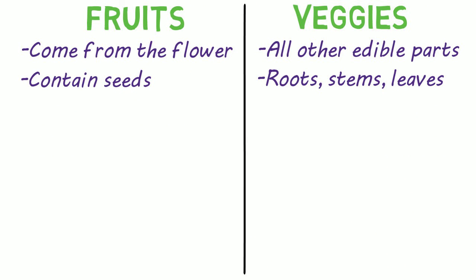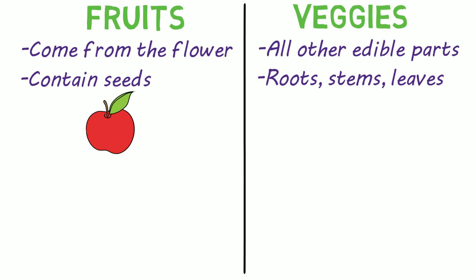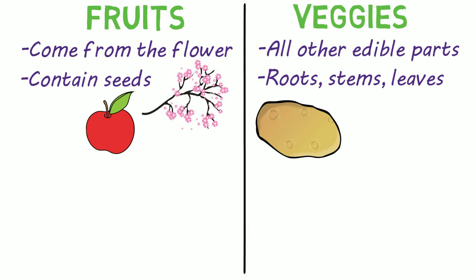Let's look at some examples to illustrate the point. Apples are a well-known fruit. The apple tree blossoms or flowers, and then apples grow from those blossoms. Additionally, apples contain seeds. How about potatoes? Obviously a vegetable — they are the root of the potato plant. Celery is a vegetable, though its edibleness is arguable. It is the stalk of the celery plant.